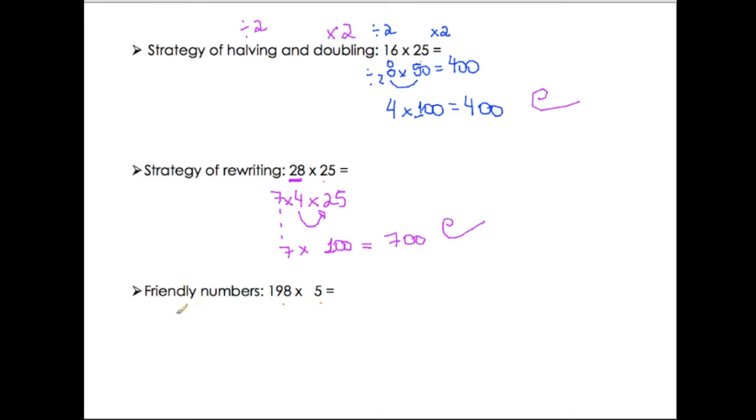The last one is friendly numbers, when you add or subtract to make one number easier to multiply. Here, for sure, if I add 2, I'll have 200. It's way easier to multiply by 5 than 198. I know that 200 multiplied by 5, I do 2 times 5, which is 10, then I add the zeros. So I got 1000. But remember that I added 2 here. I need to do 2 times 5, which equals 10.